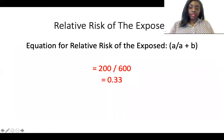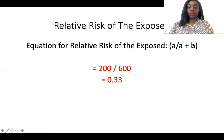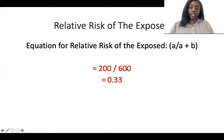The first question asks for the relative risk of the exposed. The equation is a divided by a plus b, or a divided by the total individuals who were exposed to alcohol consumption. Plugging in the numbers, that's 200 divided by 600, which gives you 0.33.